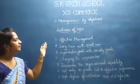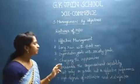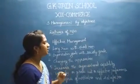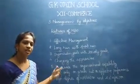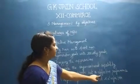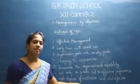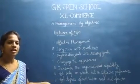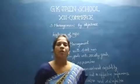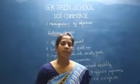To summarize the features of MBO: effective management; combining long run with short run goals; aligning organizational goals with society goals; changing approaches and modifying objectives; increasing organizational capability; focus on effective performance; and high degree of motivation and satisfaction. In the next session we will see the process of MBO and the advantages and limitations of MBO. Thanks for watching.